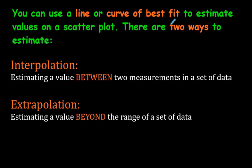So, you can use a line or curve of best fit to make a prediction or to estimate a value on a scatterplot. There are two ways to estimate. There's something called interpolation. That's when you estimate a value that's between two measurements in a set of data. And I'll show you what that means in a second. And there's something called extrapolation. And think of the word extra. Extrapolation goes beyond the range of the set of data. You see a certain trend, but then it goes beyond.